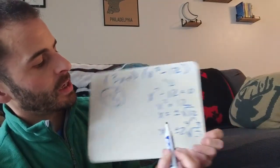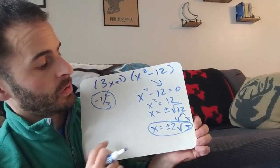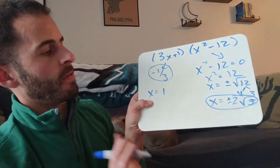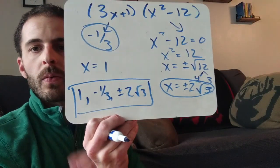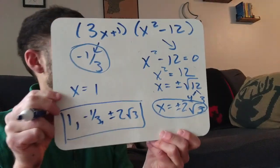So I have one solution here. Oopsies. Sorry about that. I have two solutions here. And I also had my first solution that I found with my graphing calculator, which is 1. Now let's write them nice and neatly. So I have 1, negative 1 third, and plus or minus 2 rad 3. And those are my answers. Okay? 1, negative 1 third, plus or minus 2 rad 3.